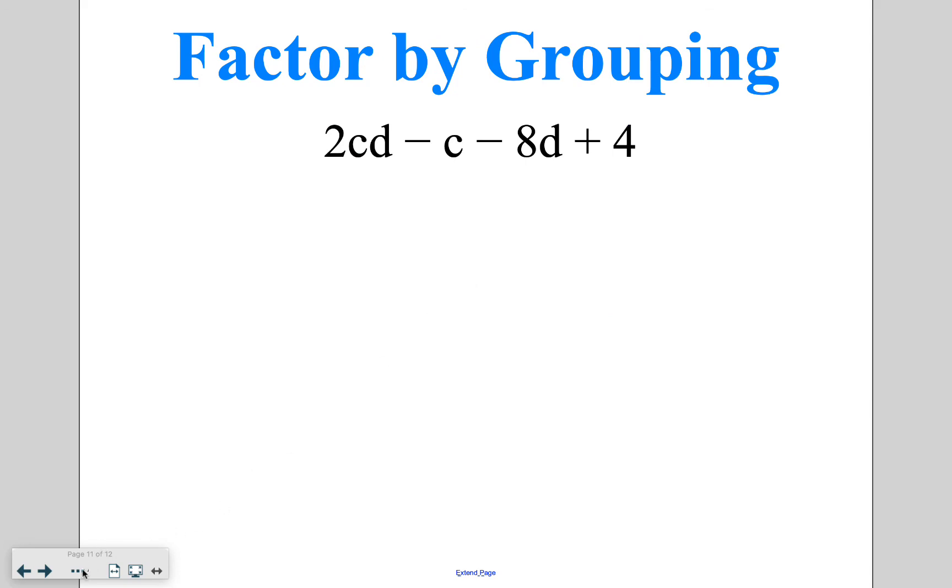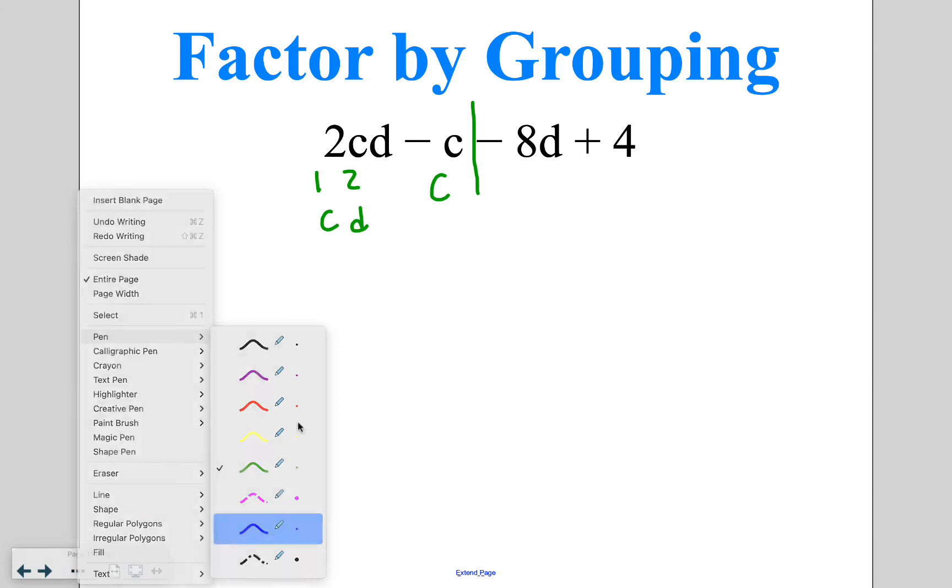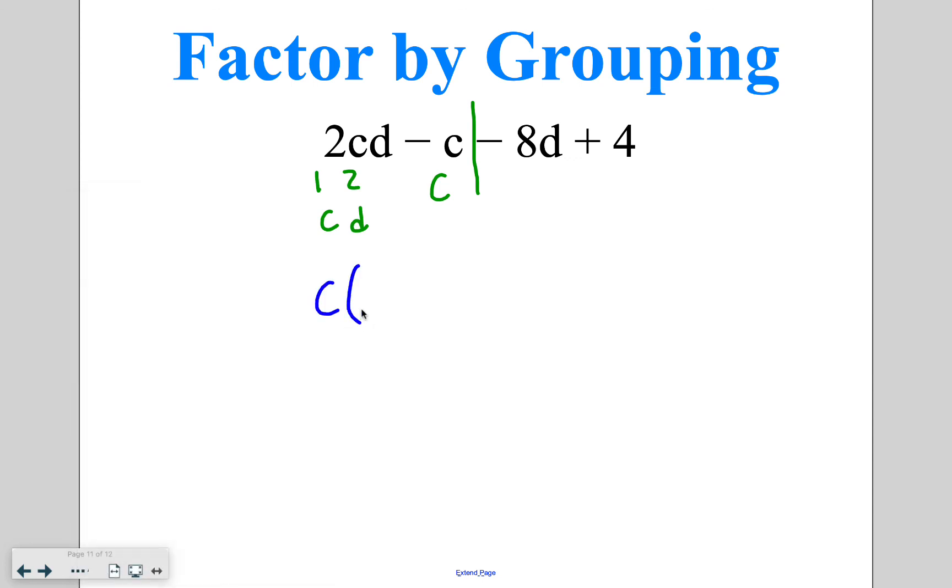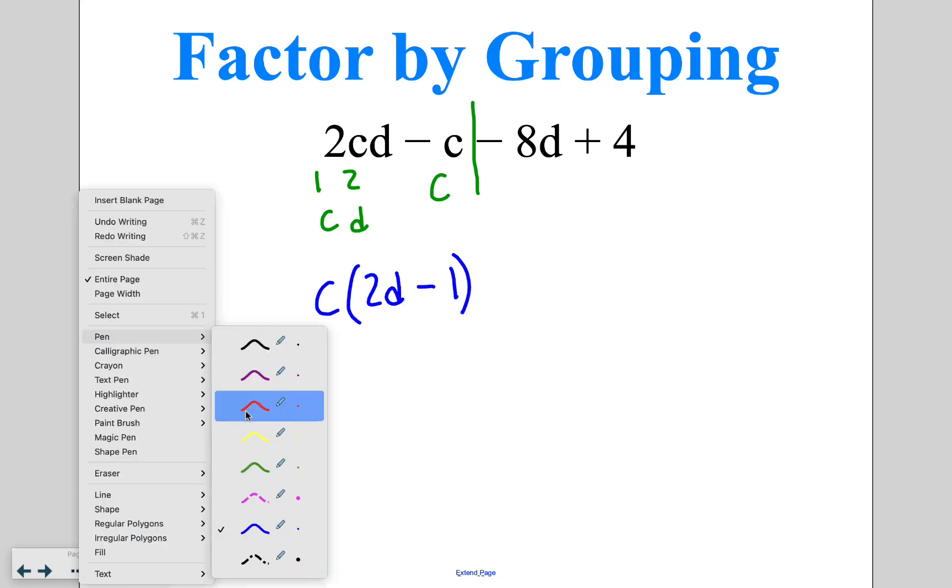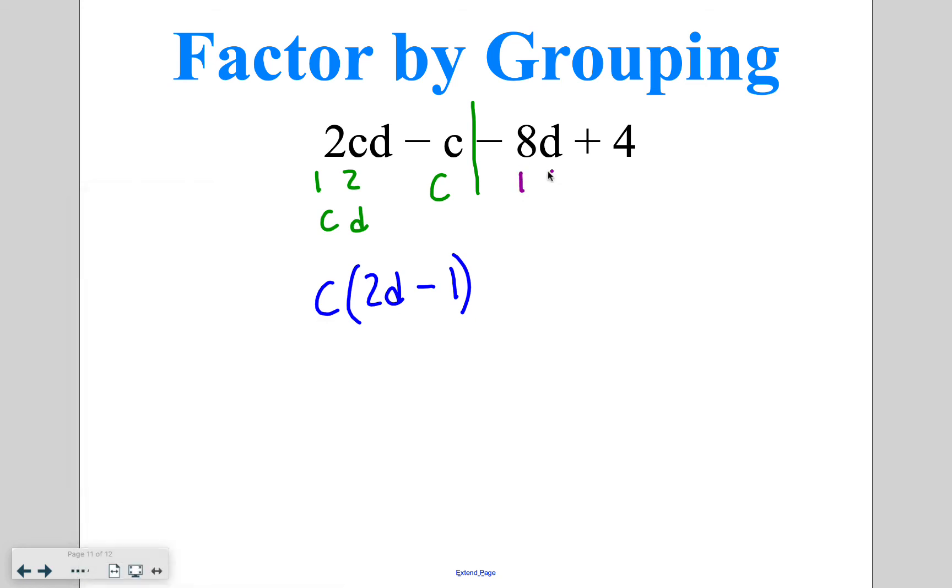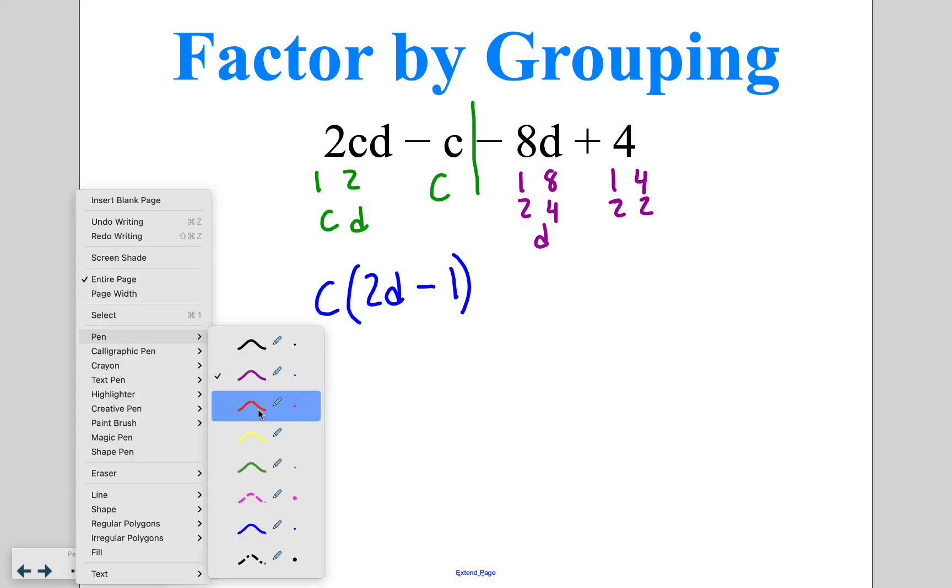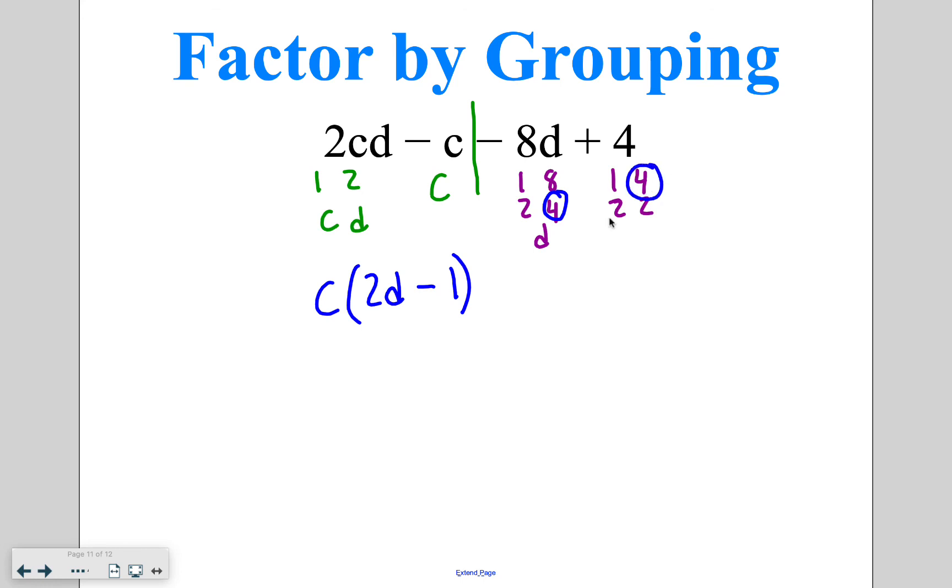Going through one more example of this. Once again, first we want to split it in half and look at just our front half. I've got 2 and C and D, and then a C. So our GCF out of this one is going to be just C, leaving us with 2D and then subtracting 1. As I come to my second part here, I've got 1 and 8, 2 and 4, with the letter D. 1 and 4, 2 and 2, giving you a greatest common factor of 4. So when I pull out the 4, I am left with negative 2D plus 1.